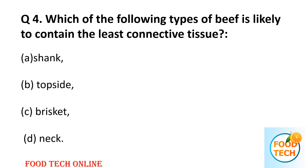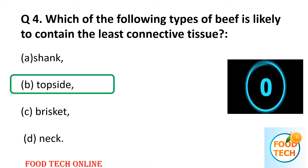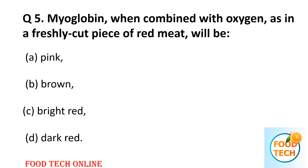Question 4: Which of the following types of beef is likely to contain the least connective tissue? A: shank, B: topside, C: brisket, D: neck. Answer: B, topside.